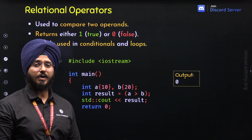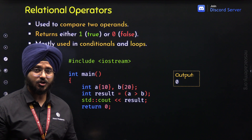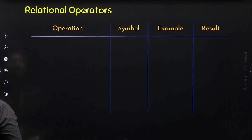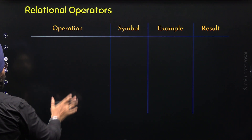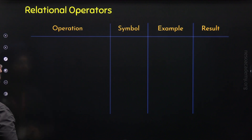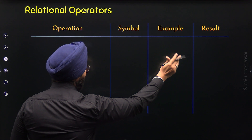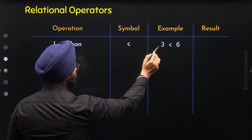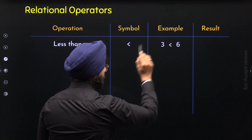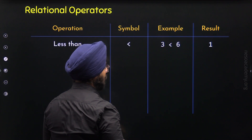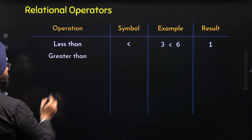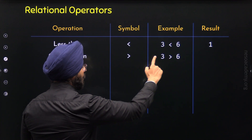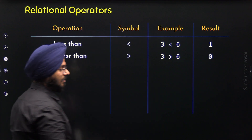The greater-than is not the only relational operator available in C++. We have many relational operators. Here in this table, I will list different operations, their symbols, examples, and results. The first operation is less-than, symbol is '<', and the example is 3 < 6. We know 3 is less than 6, so we get 1 as the result, which represents true. The second operation is greater-than, symbol is '>', and the example is 3 > 6. Since 3 is not greater than 6, we get 0, which represents false.